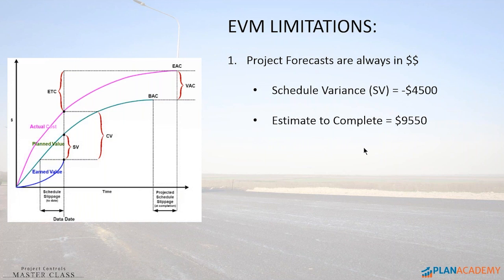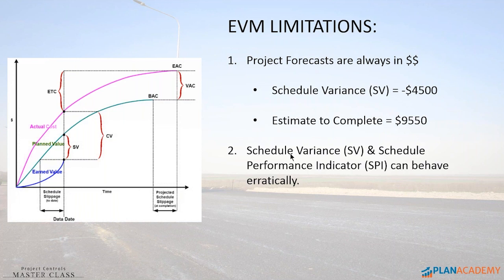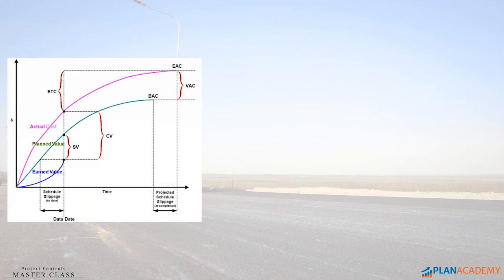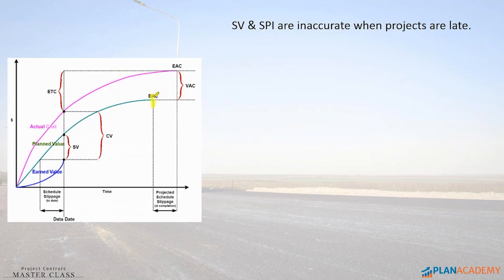Number two, there's another problem here. Schedule variance, shortened to SV, and schedule performance indicator, SPI — these guys can behave erratically. When projects are past their expected finish date, when we get into late situations where projects are going beyond the planned finish, going beyond budget at completion and out, then we start to see erratic behavior in SV and SPI.